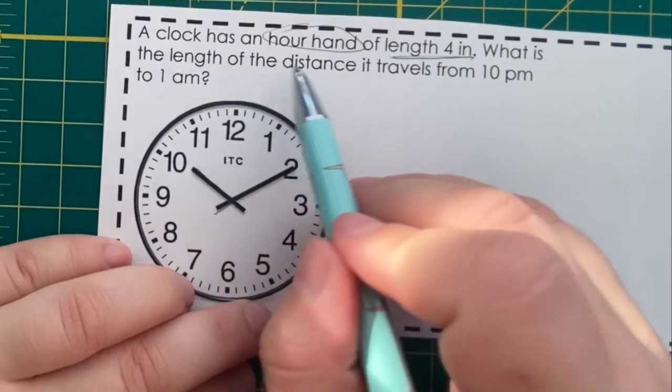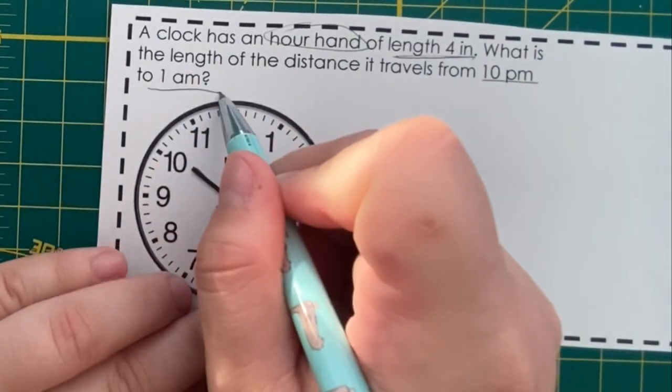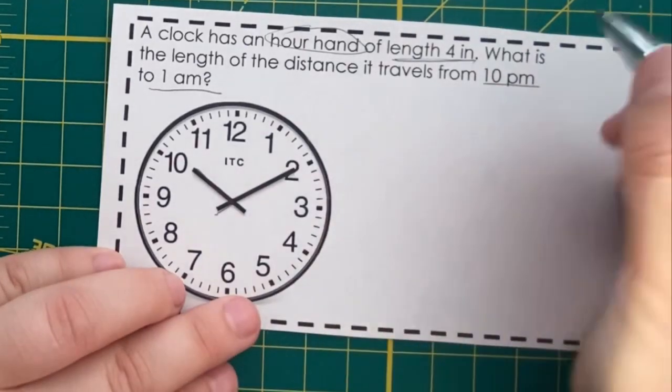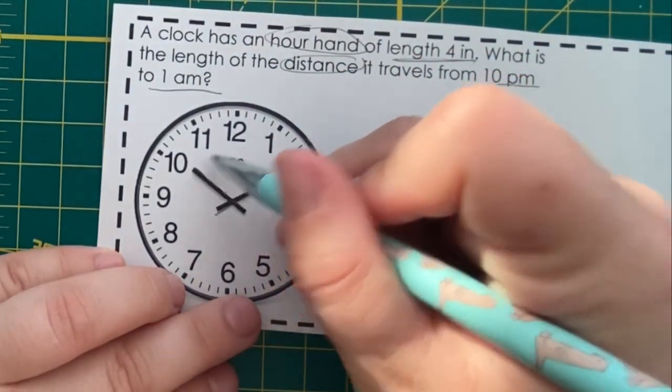What is the length of the distance it travels from 10 p.m. to 1 a.m.? So, if we're talking about distance with these hands on a clock,